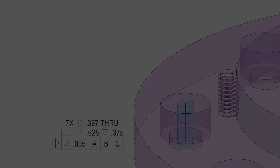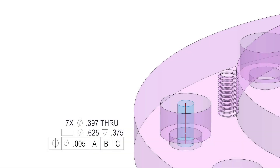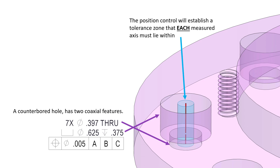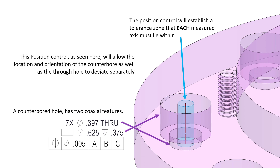And we have at least seven line items for position — I say at least because if we take a look at one of these seven instances, the counterbore actually has two coaxial features and the position is applied to each one of these axes. So we can see we can have an axis that represents the counterbore diameter and an axis that represents the through hole diameter. The position control will establish a tolerance zone that each of these axes must lie within, so this position control will allow the location and orientation of the counterbore as well as the through hole to deviate separately.